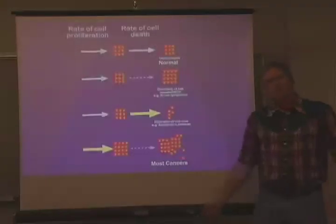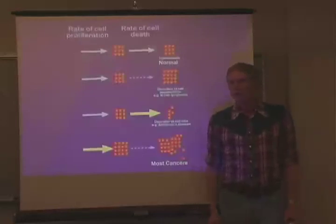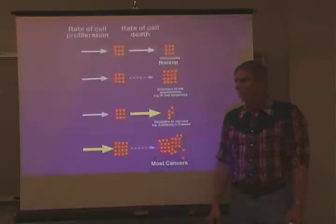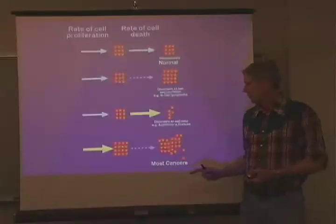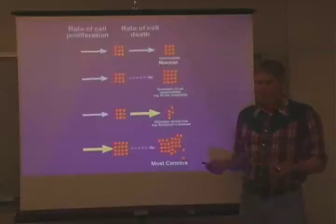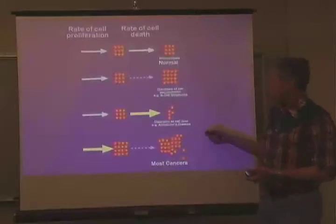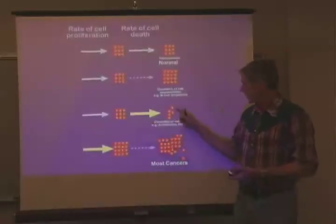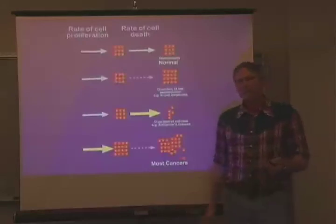Cancer is typically the result of many mutations — five, six, or more. Some activate cell division and some inactivate cell death. P53 is a tumor suppressor that can cause cell death. You can also have a hyperactive cell death pathway — programmed cell death or apoptosis — and that can cause disorders such as Alzheimer's disease, where you get too many cells lost.